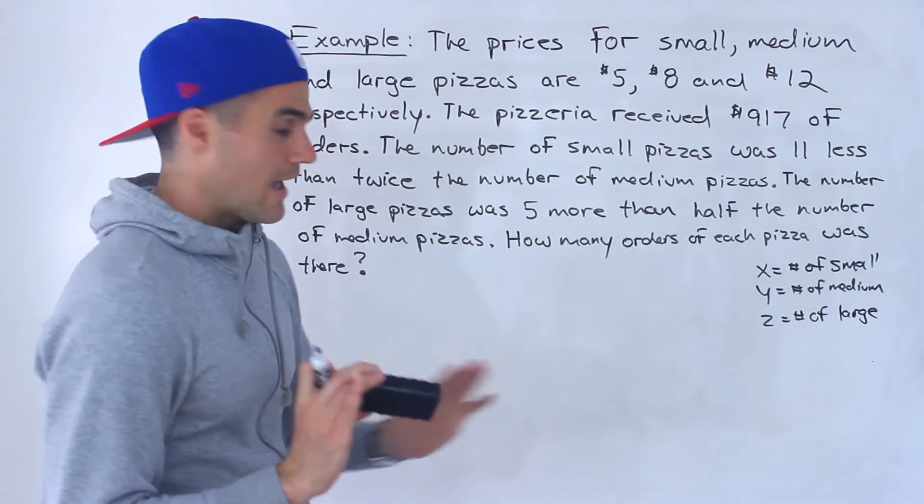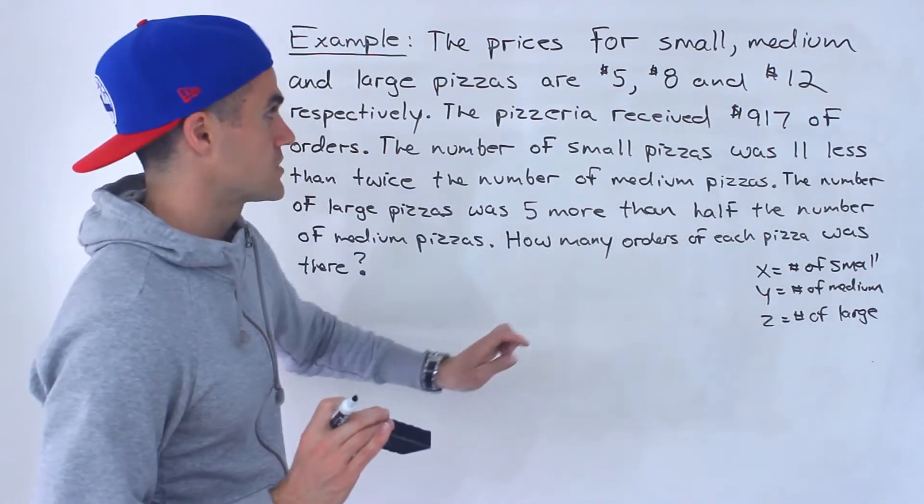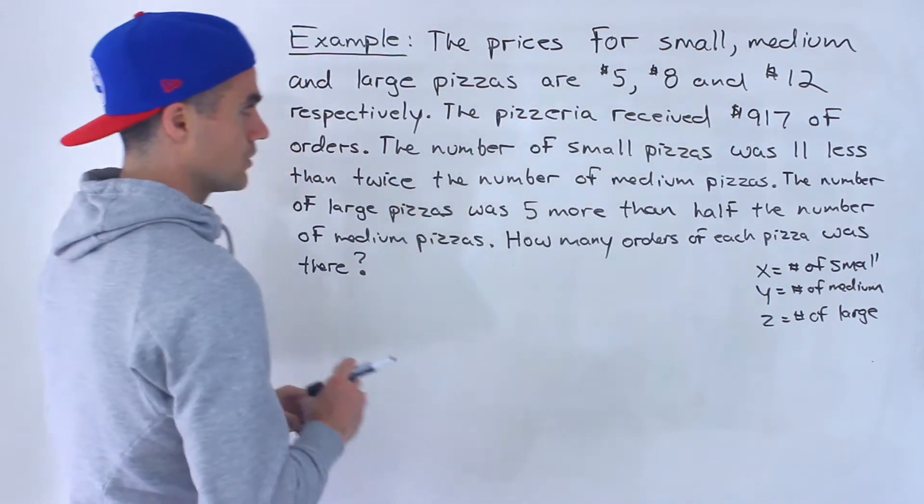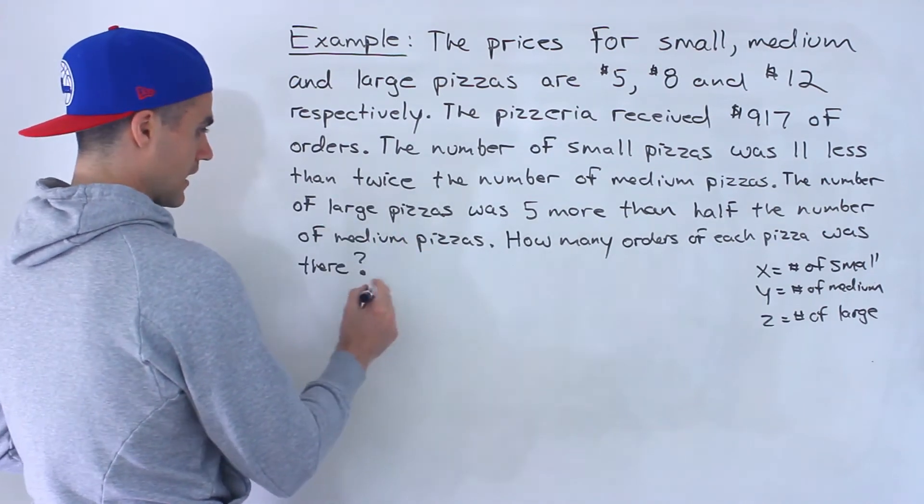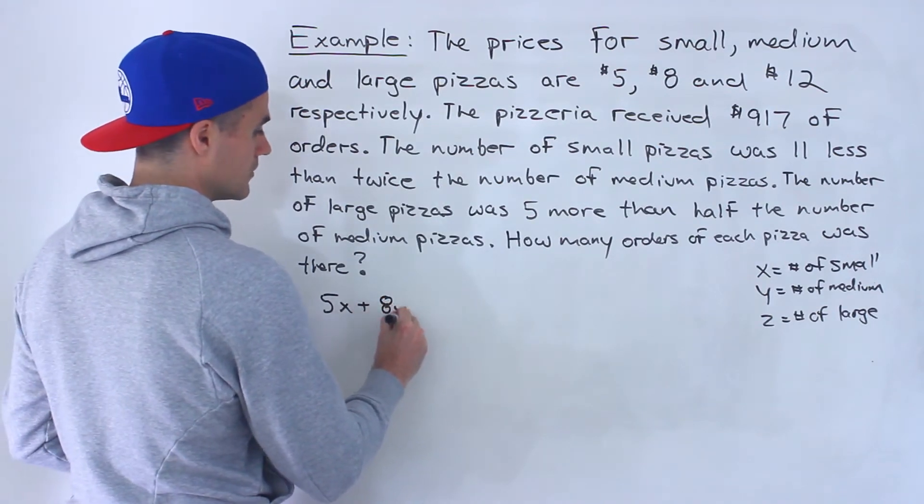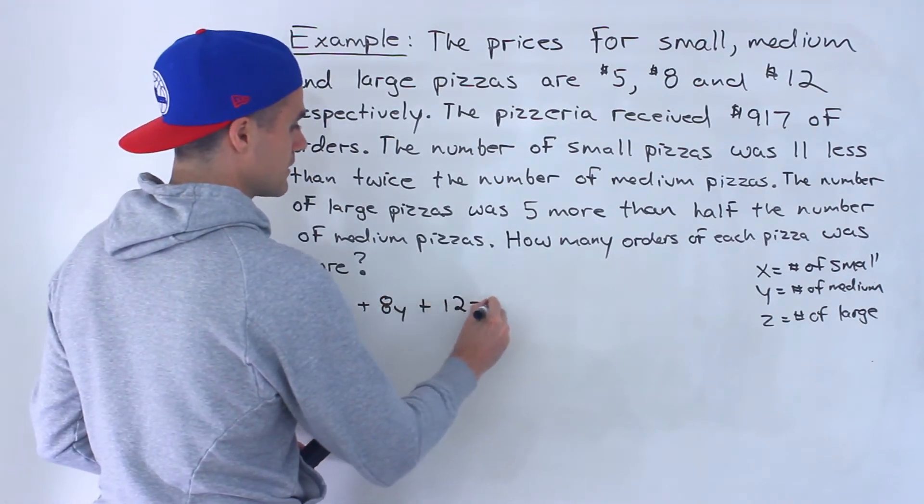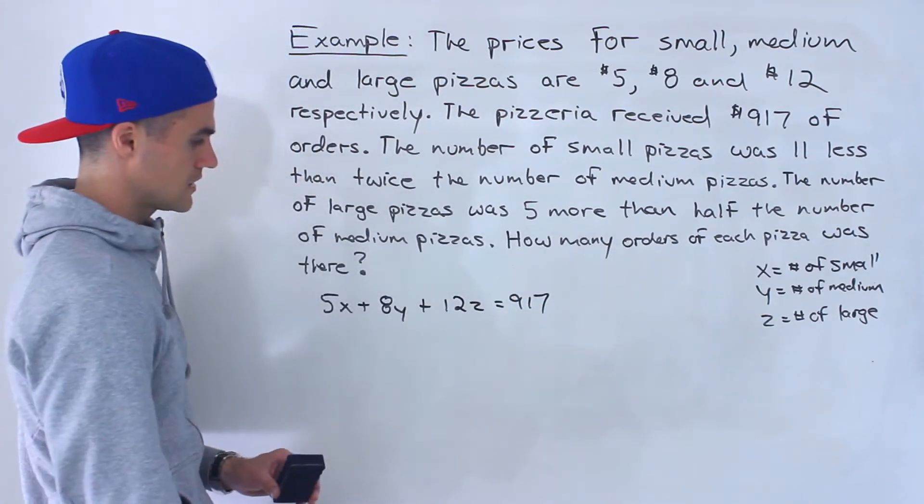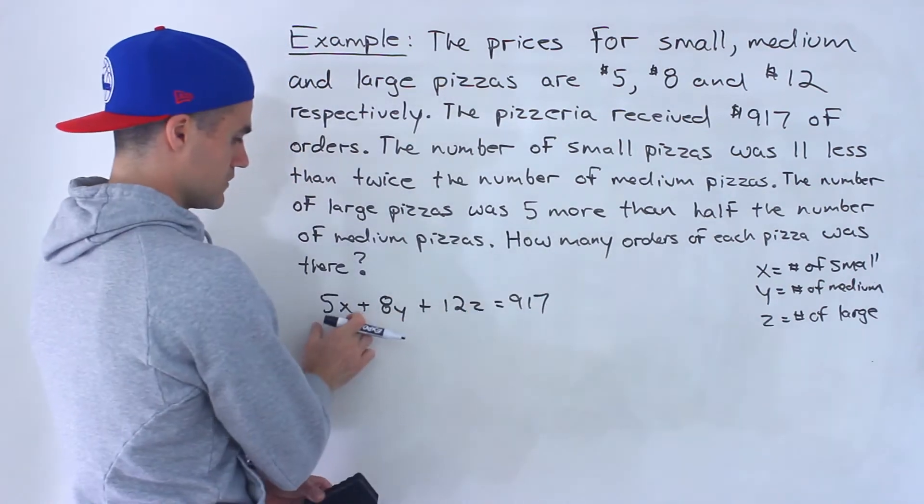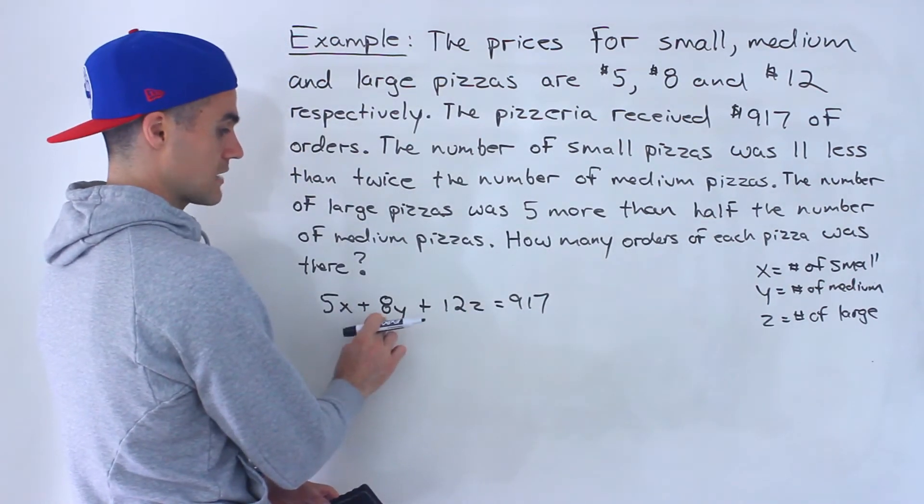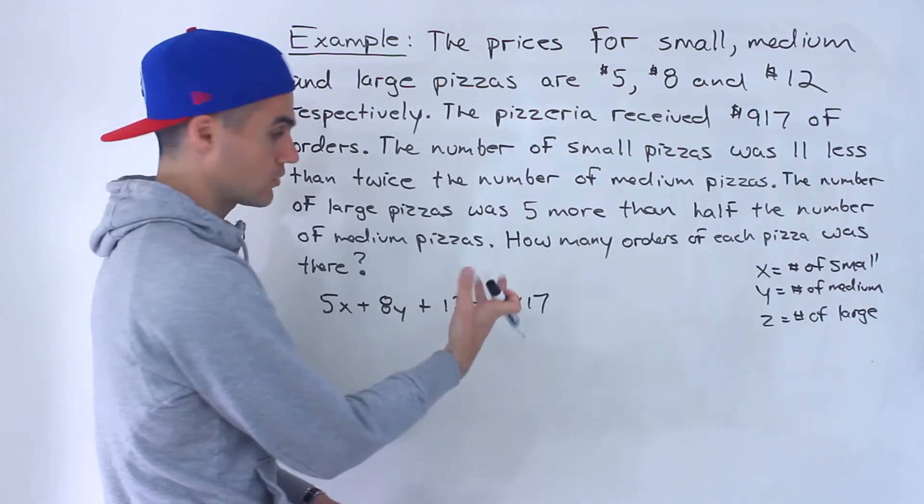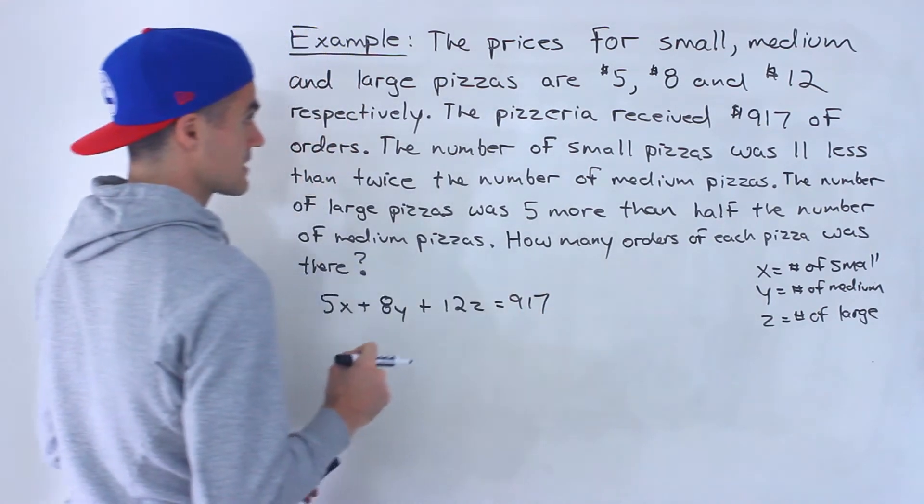So because we have three unknowns here we're actually going to have to make three equations somehow. Now the $917 of orders, notice we can make an equation from that and what it would be, it would be 5x plus 8y plus 12z is equal to 917. The number of small pizzas times the price of each small pizza plus the number of medium pizzas times the price per medium pizza plus the number of large pizzas times the price per large pizza. The total of that is 917.